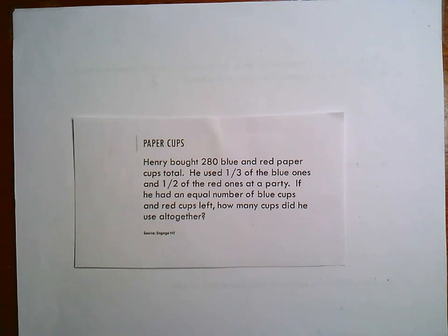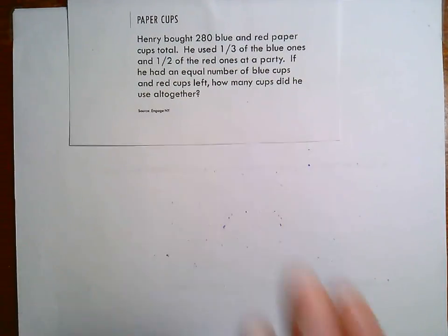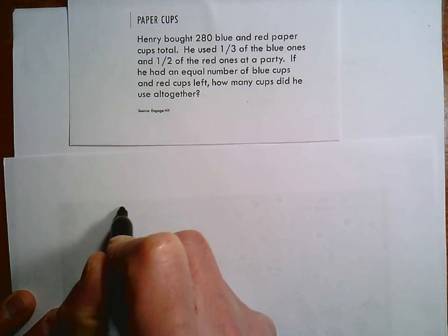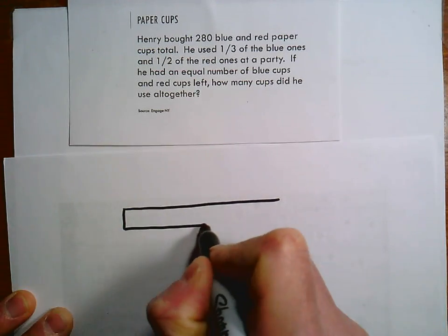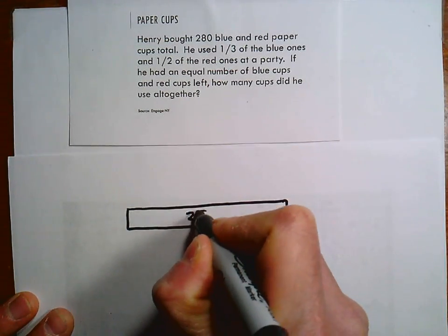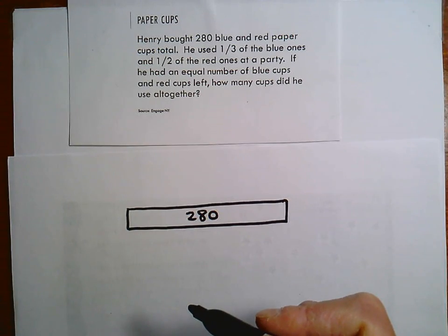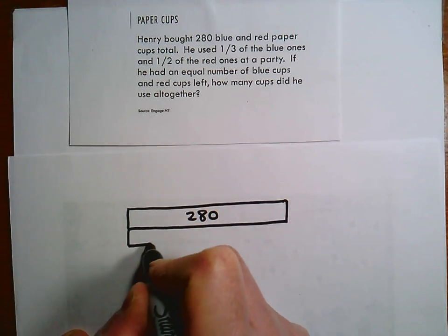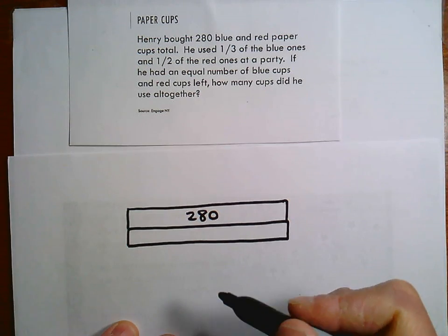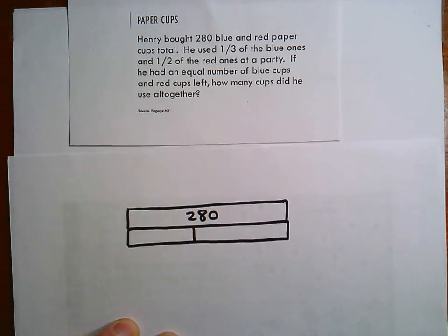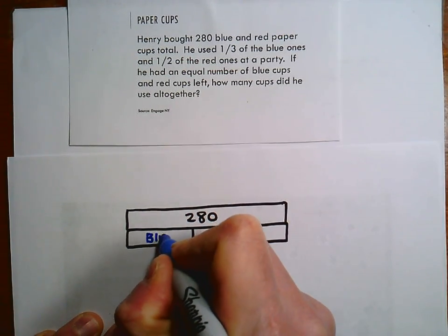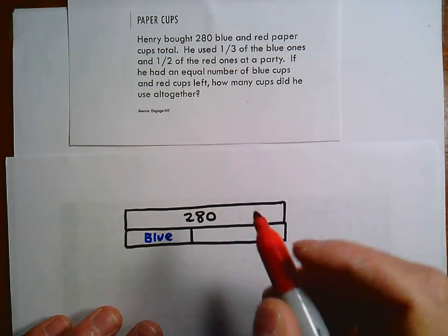Let's see how we can do this. I'm going to start off with a piece of tape — these are Henry's cups, 280 all together. Some are blue and some are red. This is the tricky part: we can't assume 140 each, so I'm going to draw the line offset, somewhere like that. Let's say these are blue over here and red over here.